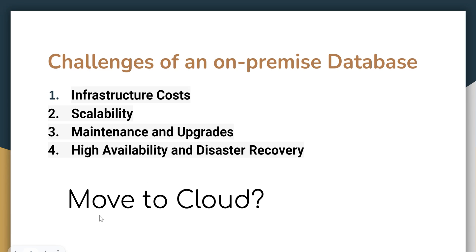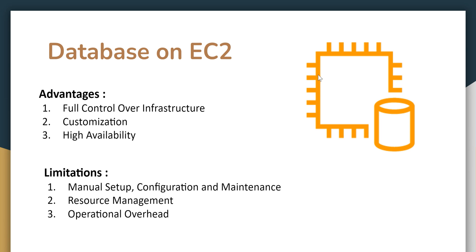So what is the solution — does just moving to cloud fix all those issues? Let's imagine we are hosting a database on an EC2 server instead of an on-premise server. It solves the infrastructure problem to an extent: you have full control of infrastructure, you can scale up and down more flexibly, deployment is easy, and you can customize the operating system and things like that. AWS also promises high availability, which you cannot guarantee on-premise.